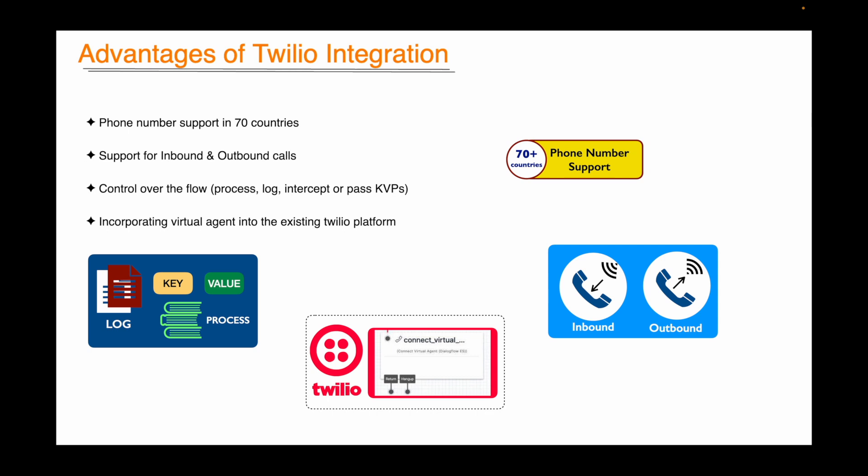Yes, it does, but with a few caveats. Like, DialogPro CX gateway provides only US phone numbers, whereas in Twilio, 70 plus countries are supported. DialogPro CX phone gateway supports only inbound calls. With Twilio, you can use your agent in the outbound call.